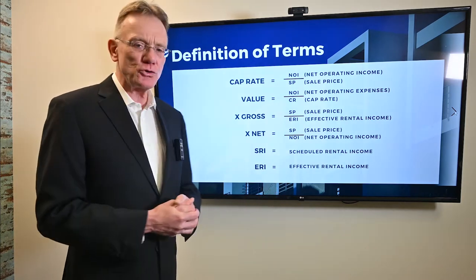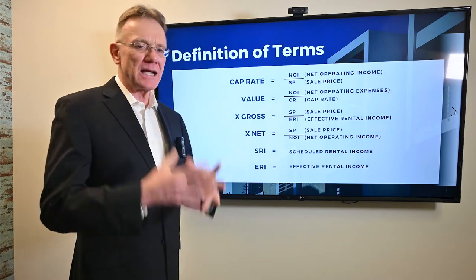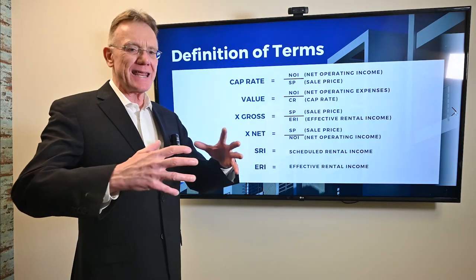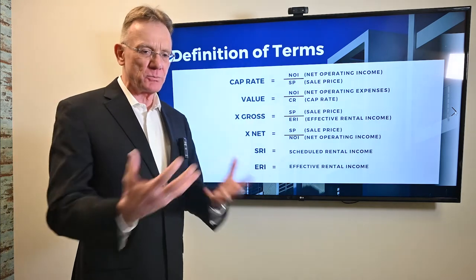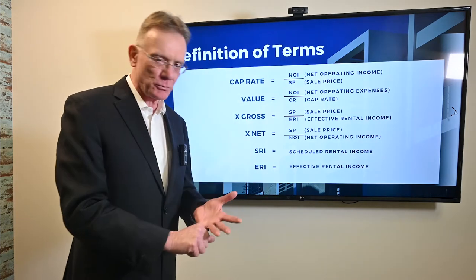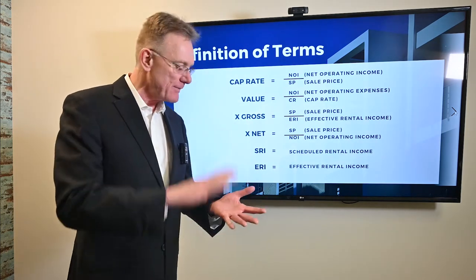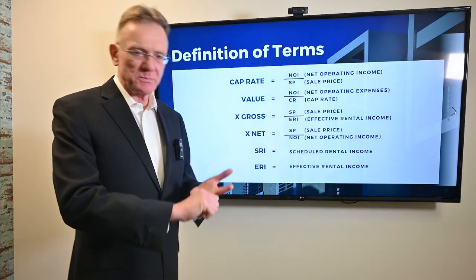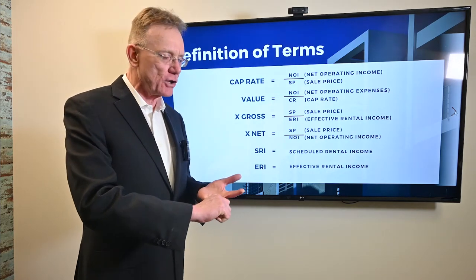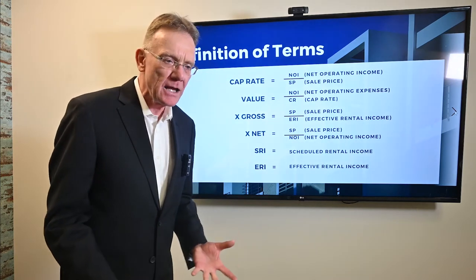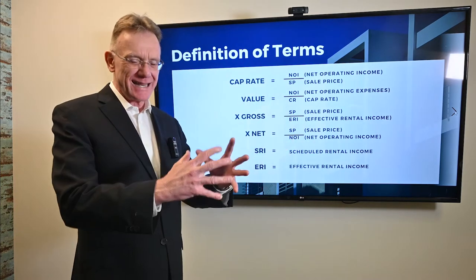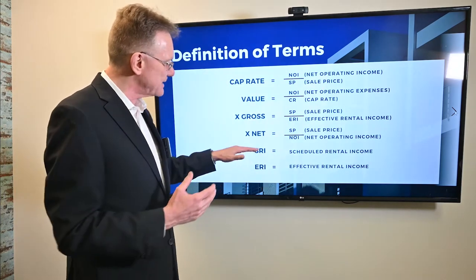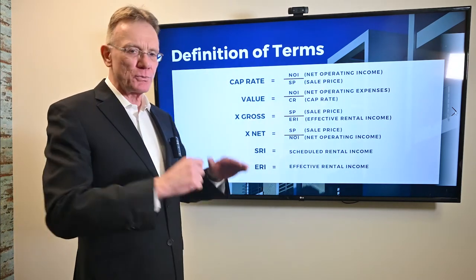SRI — the scheduled rental income. This is how much money a property can generate when it's taking in funds from every possible revenue source. For example, you've got the rent on the property, maybe the landlord charges for parking, maybe there are funds from locker rentals. When the property is completely tenanted and generating all those sources of revenue, that is the scheduled rental income.